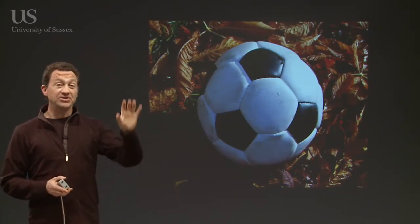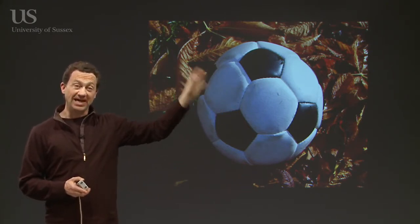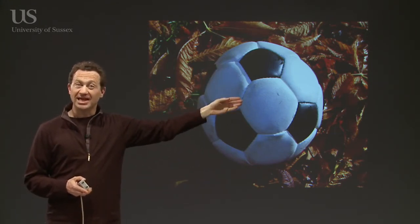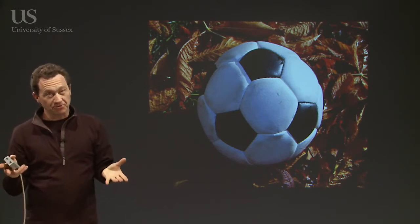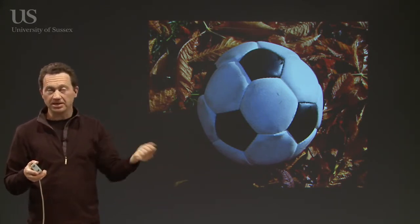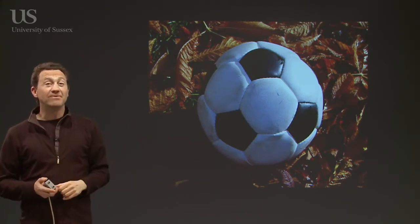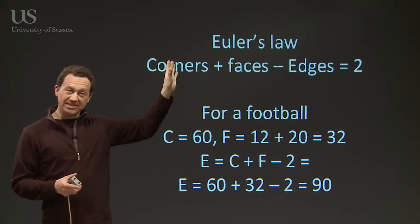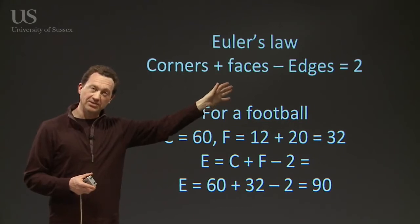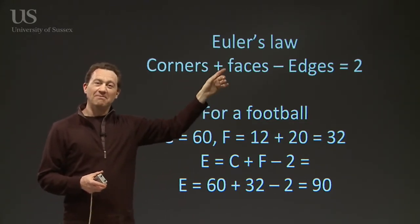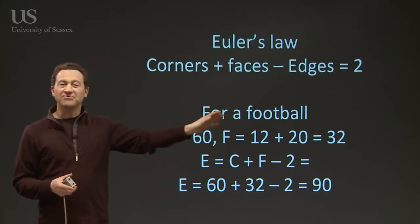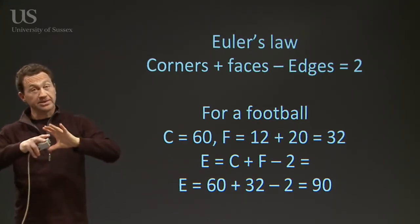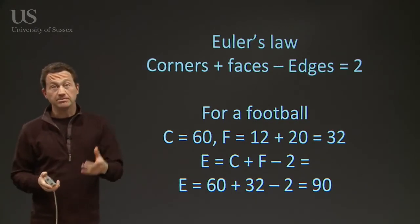And you can apply this to the football. If you take a football, it's easy to count the pentagons and the hexagons. We know it's got 60 corners because it's the C60 molecule. But how many edges does it have? If you go around a football you just lose count all the time. But if you remember Euler's law you can work it out. If corners plus faces minus edges equals two, we know the corners are 60 and the faces are 12 pentagons and 20 hexagons. So 60 plus 32 minus edges equals two. We can rearrange the formula and use Euler's law to prove that the number of edges in the football is 90 — or the number of bonds in C60 between the atoms is 90 bonds.